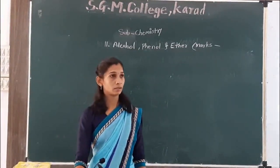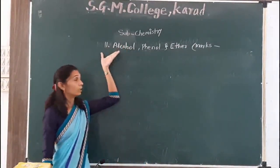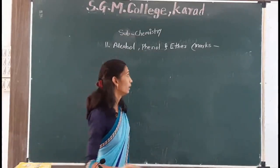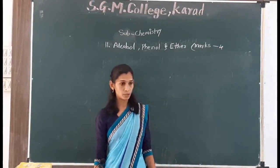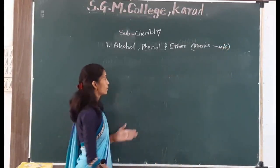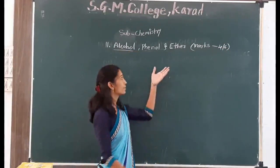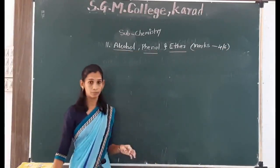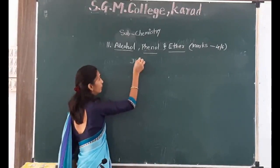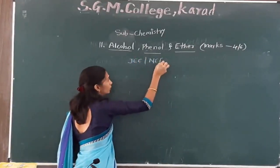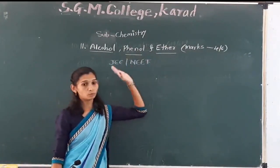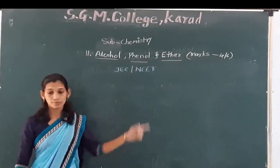Today we start a new chapter — chapter number 11 in organic chemistry: alcohol, phenol and ether. That chapter has marks; without option and with option it has six marks. This chapter is also important for our JEE exam and NEET exam. More than four questions are asked in JEE as well as the NEET exam.